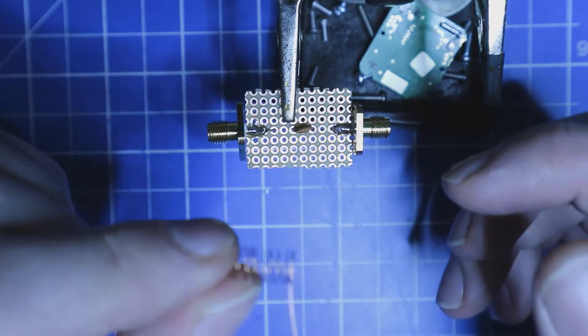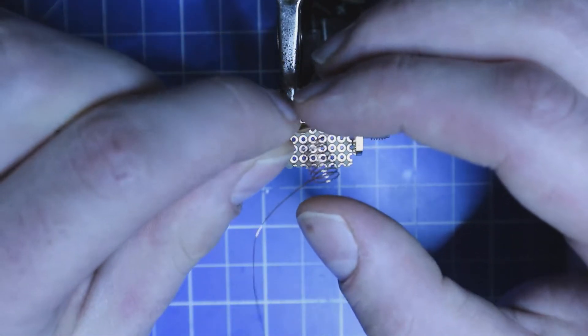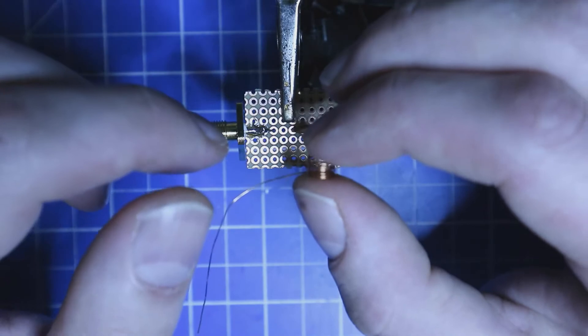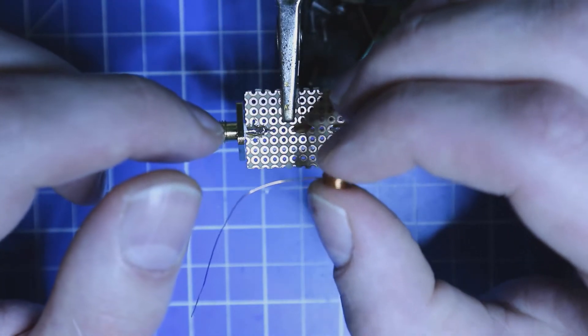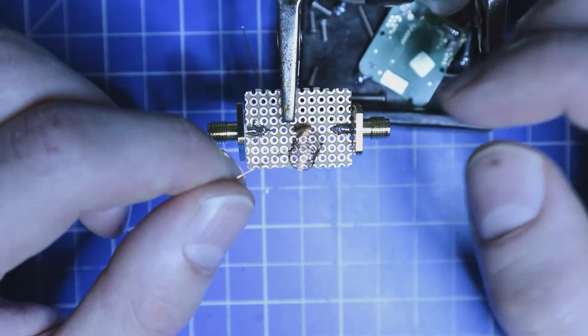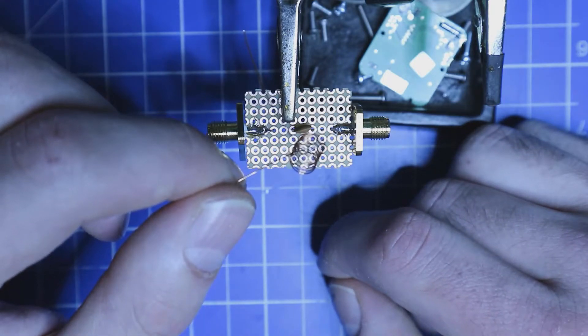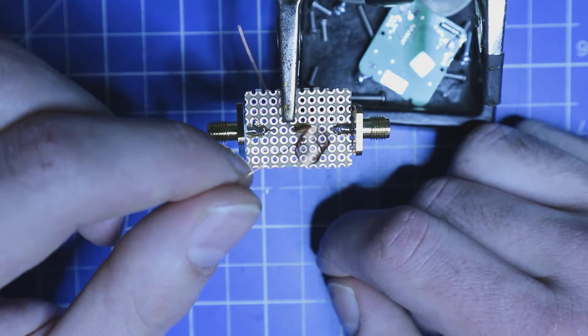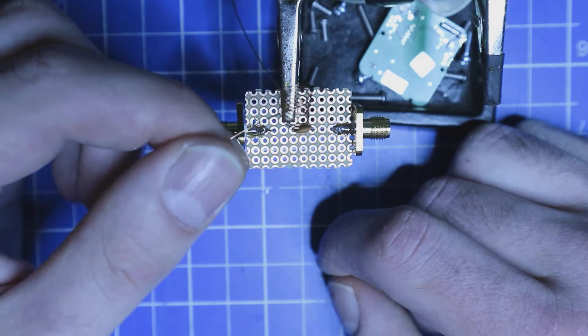If you are using the same wire as me, there is insulation on the wire. So make sure you scrape it away before soldering.